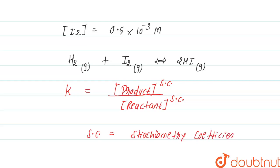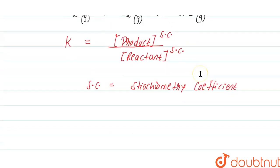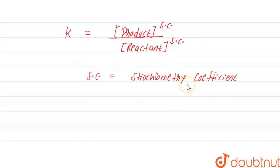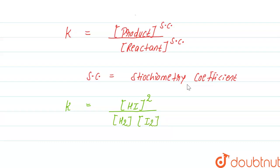Now write down the equilibrium expression for the given chemical reaction. K equals the concentration of HI gas at equilibrium raised to the power 2, its stoichiometric coefficient, upon the concentration of H2 with stoichiometric coefficient 1, multiplied by the concentration of I2 with stoichiometric coefficient 1. We know the value of K, the concentration of HI, and the concentration of I2, so we can easily find the concentration of H2.